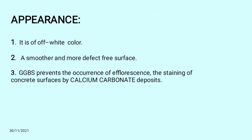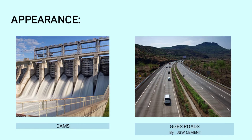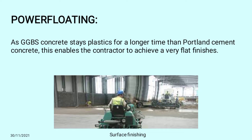Air Appearance: GGBS concrete is of white color, giving a smoother and more defect-free surface. GGBS prevents the occurrence of efflorescence and the staining of concrete surfaces by calcium carbonate deposits. Power Floating: As GGBS concrete stays plastic for a longer time than Portland cement concrete, this enables the contractor to achieve a very flat finished surface.